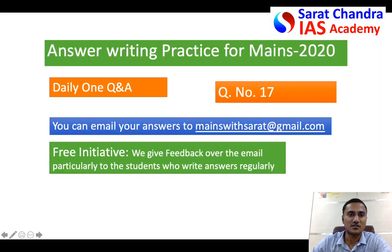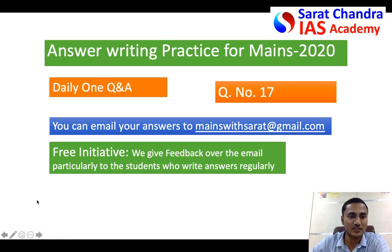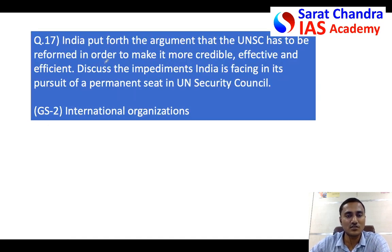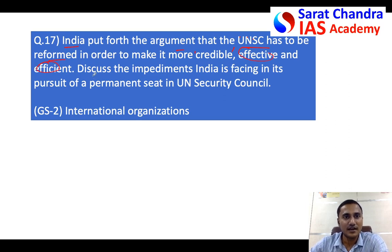Today we will discuss the answer for question number 17 that I gave you yesterday, and at the end of class I will give you question number 18 for tomorrow. Question 17 states that India is arguing that the UNSC must be reformed to make it more credible, more effective, and efficient. The question asks you to discuss the impediments — that is, obstacles — that India faces in becoming a permanent member of the UNSC.